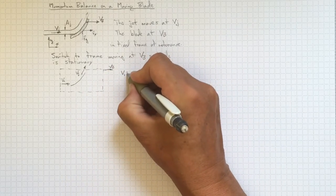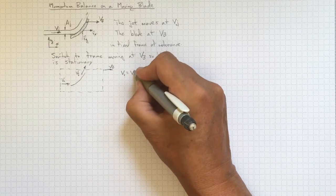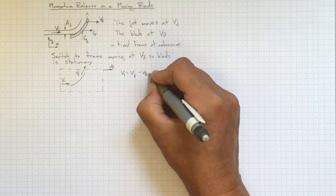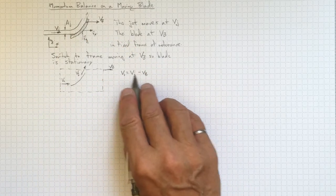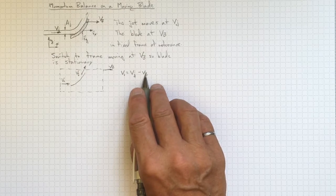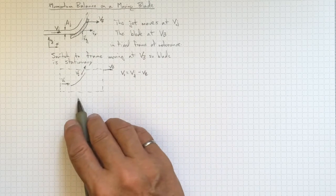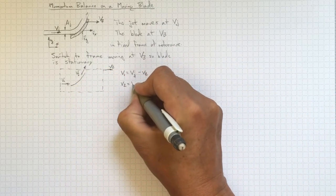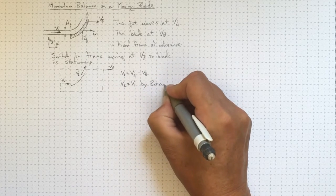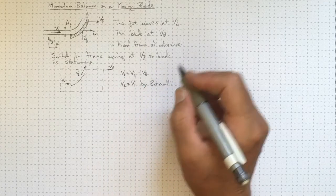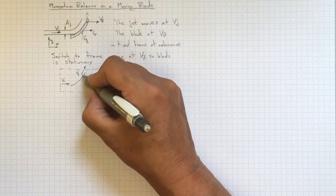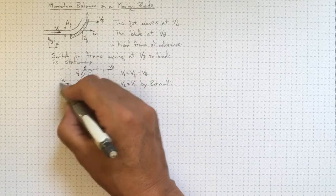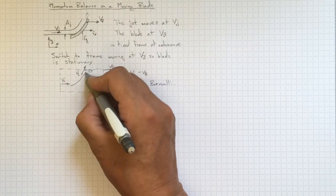V1 is going to be equal to whatever the jet velocity was, Vj, minus whatever the blade velocity was, Vb, because the control volume is now moving at Vb. So this is the relative velocity of the jet relative to the control volume. We're going to neglect friction and neglect gravity, so V1 and V2 are going to be equal to each other by Bernoulli. And the angle at which V2 comes out is going to be the same as the angle theta of the blade, because the flow just follows the stationary blade.